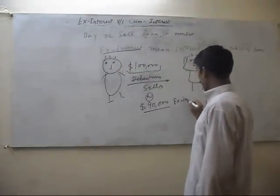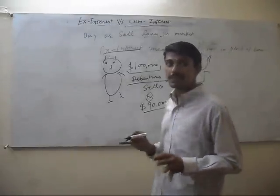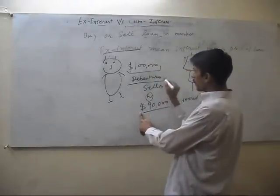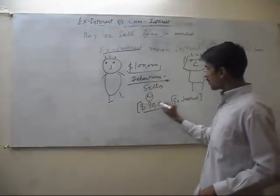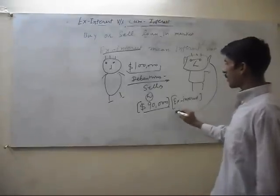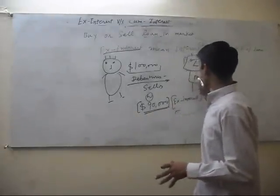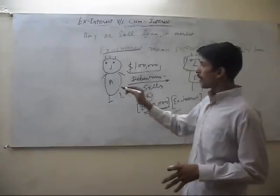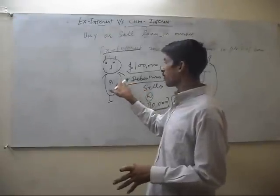it means there is no interest in the selling price of the debenture. So this is the investment of this person, and we will write $90,000 in the investment account of B. This is A, and we will write the deduction of $90,000 in the debenture account of A.